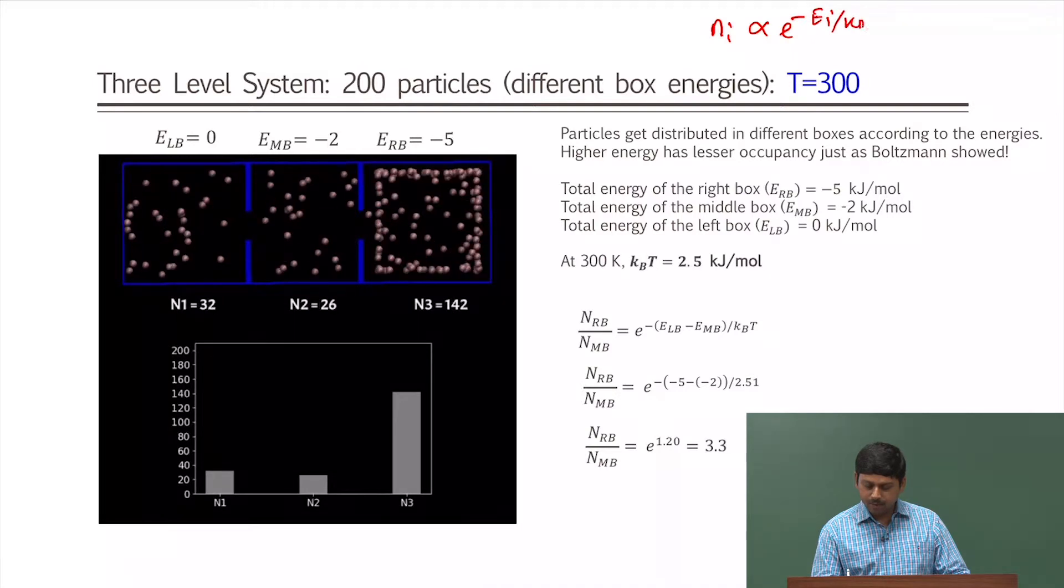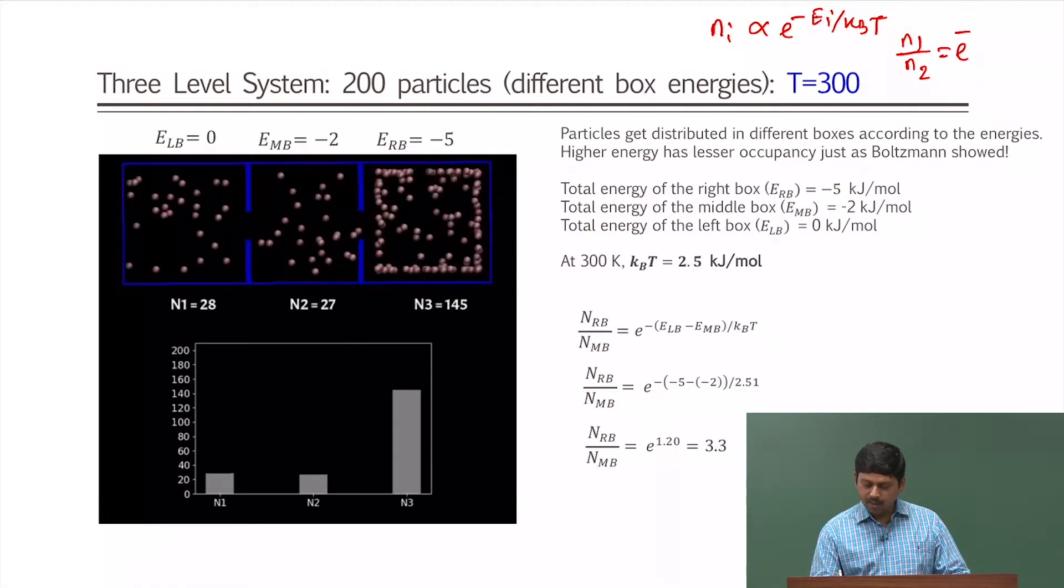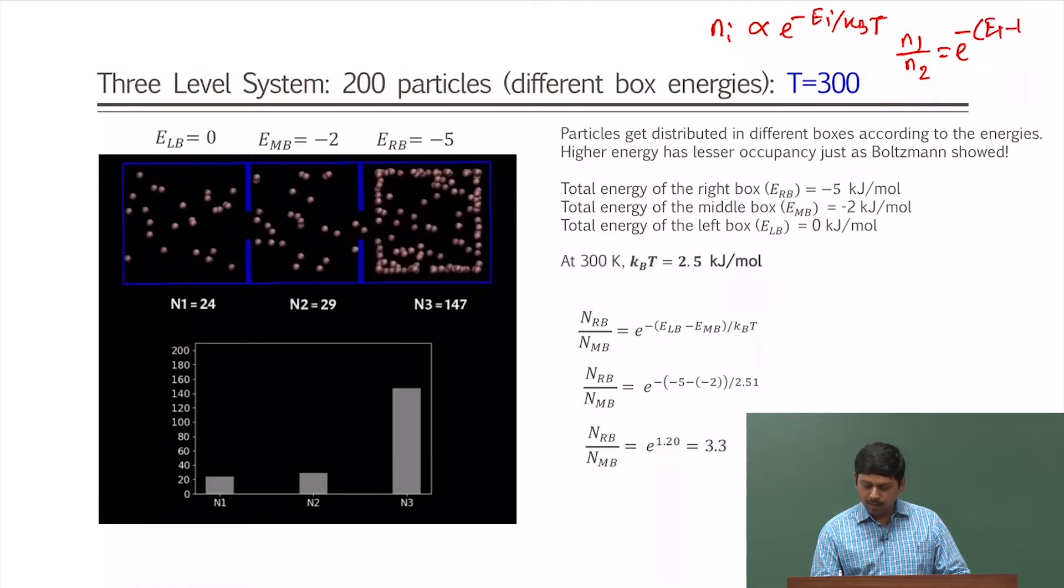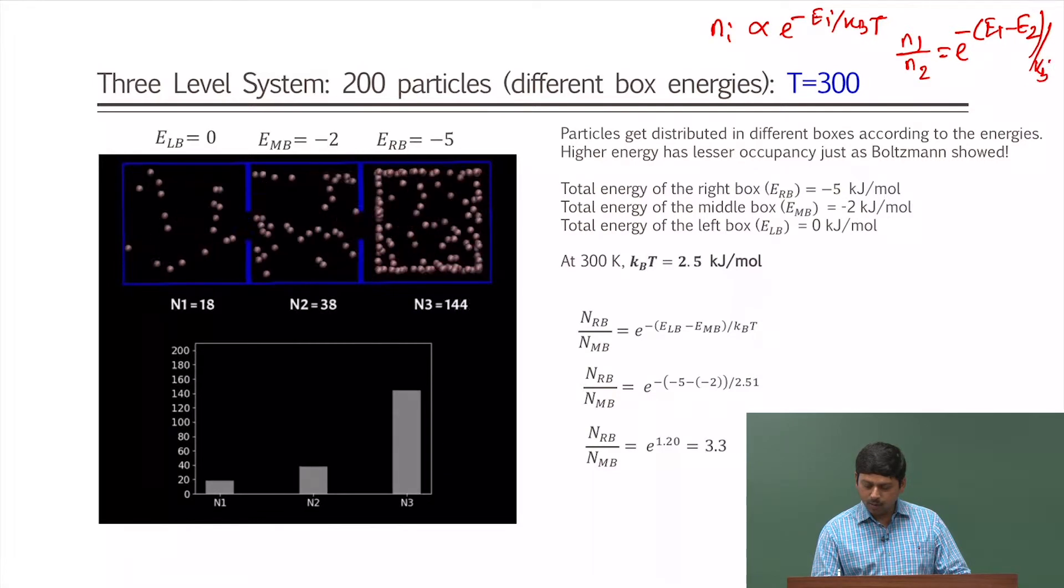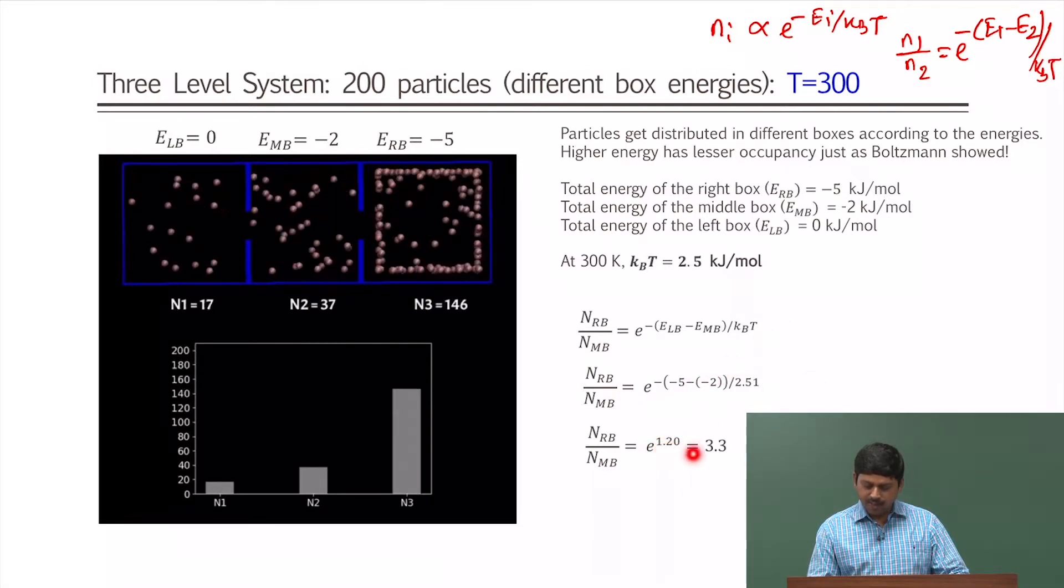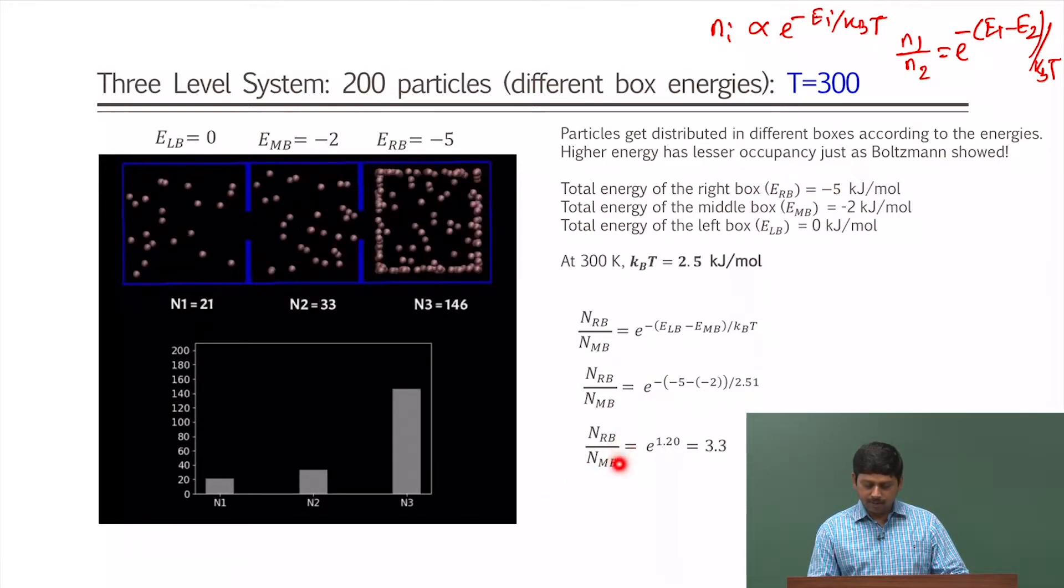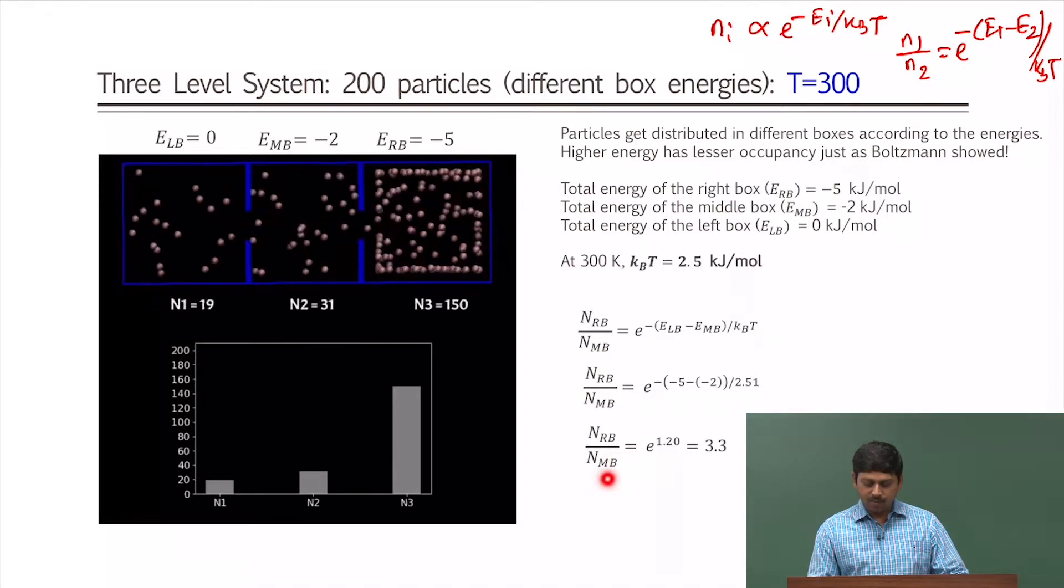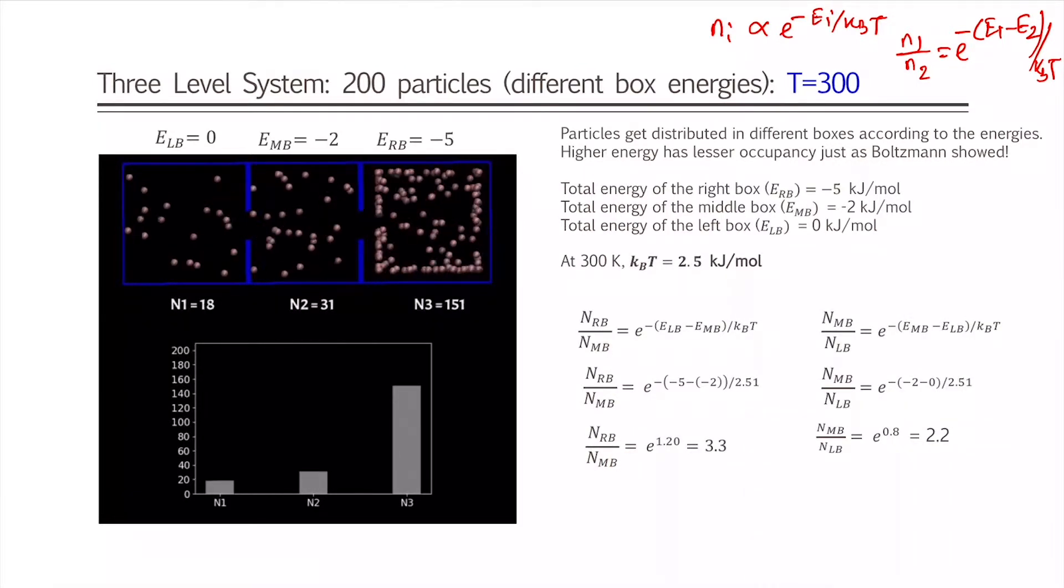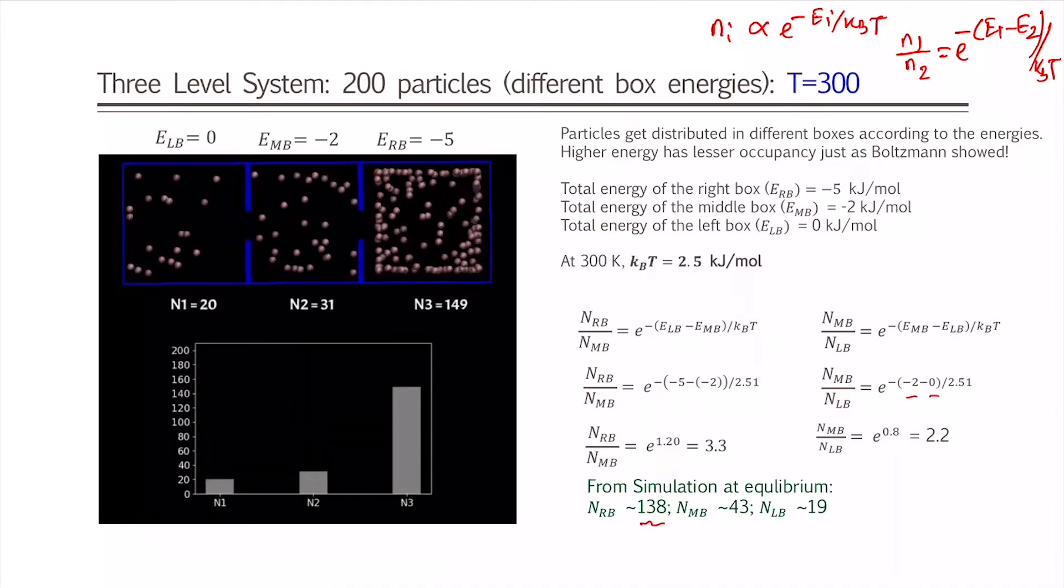In that case then N_1/N_2 will become e^(-(E_1-E_2)/k_B T). That is what we are showing here. We put the values and we get around 3.3 times of the right box—we will have 3.3 times of the middle box. Then we compare middle box with the left box again using the same energy. The energy values that are there mentioned: minus 2 is for the middle box and 0 for the left box, and what we get is 2.2.